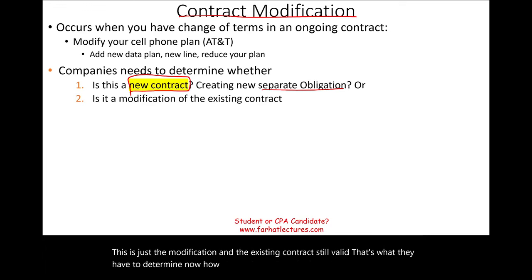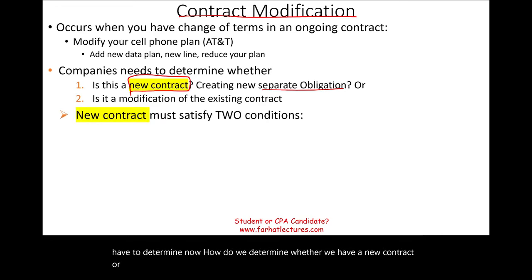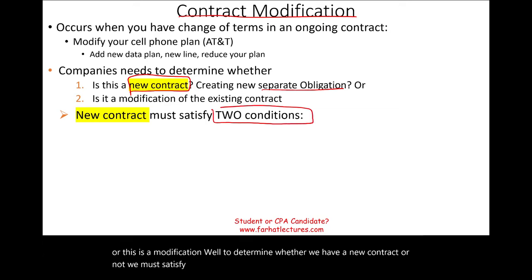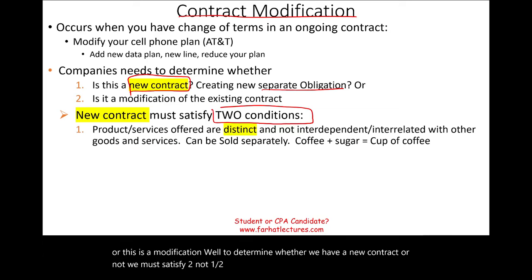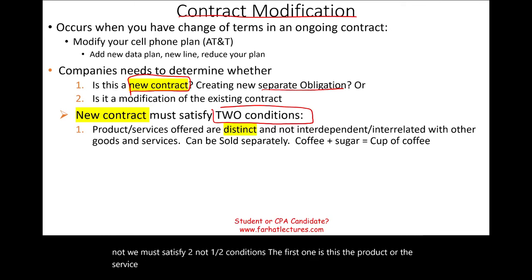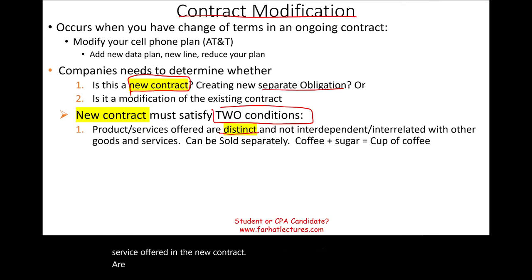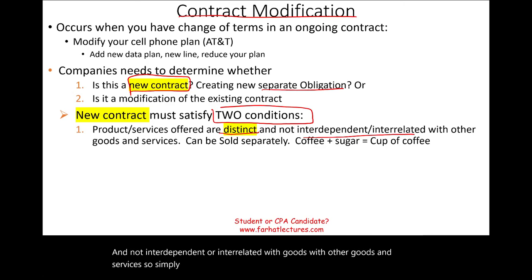To determine whether we have a new contract, we must satisfy two conditions. The first condition is that the product or service offered in the new contract is distinct and not interdependent or interrelated with other goods and services — meaning we are offering a product that is unique and distinct.